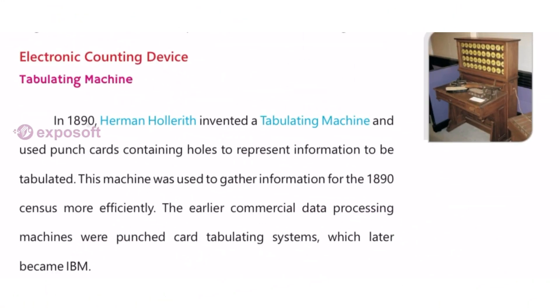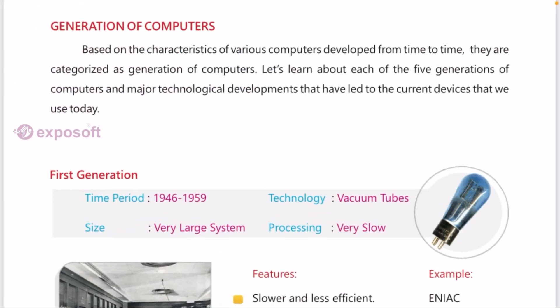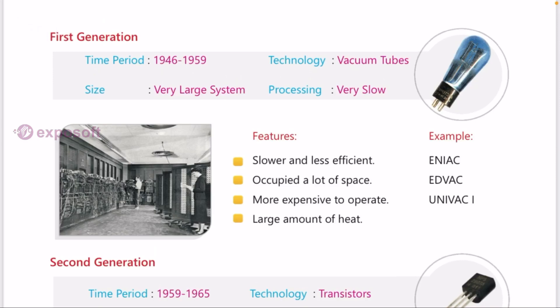Tabulating machine is an electronic counting device. Generations of computers: there are five generations of computers. First generation - size is very large, technology is vacuum tubes, and processing is very slow.